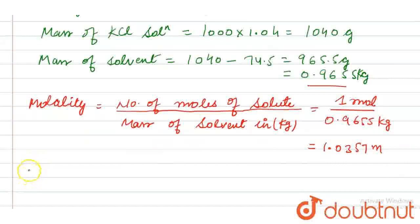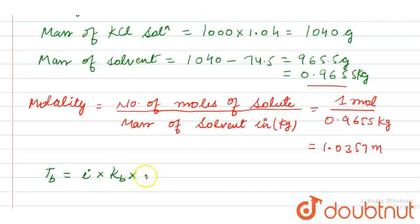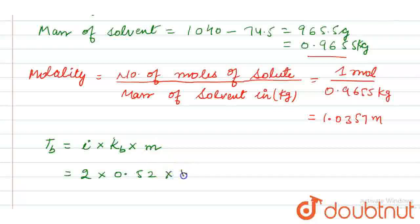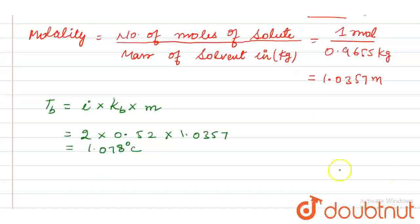The formula for boiling point elevation is ΔTb equals i multiplied by Kb multiplied by m. We have i equal to 2, Kb equal to 0.52, and m equal to 1.0357. After calculating, the value is 1.078 degrees Celsius.